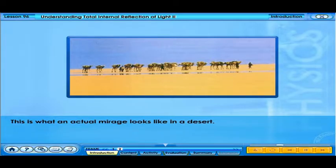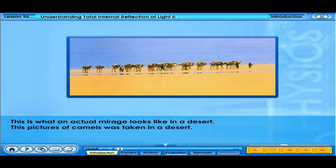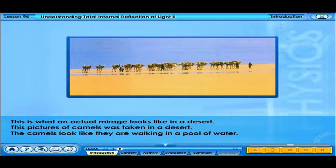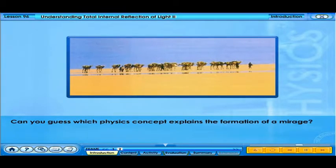This is what an actual mirage looks like in a desert. This picture of camels was taken in a desert — the camels look like they are walking in a pool of water. Can you guess which physics concept explains the formation of a mirage?